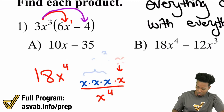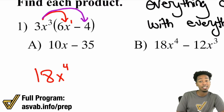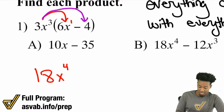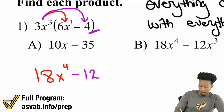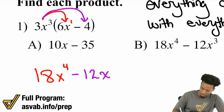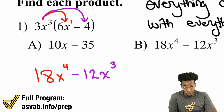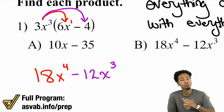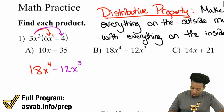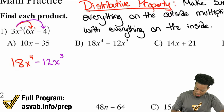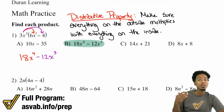Rewind if you need to see that again. Now let's take care of three X cubed times negative four. A positive times a negative is a negative, and three times four is 12. Notice there's no X in the negative four, so you just rewrite the X cubed and you're good. We're not combining like terms here — this is multiplying. Different set of rules. Keep adding and subtracting separate from multiplying. The correct answer is answer choice B.